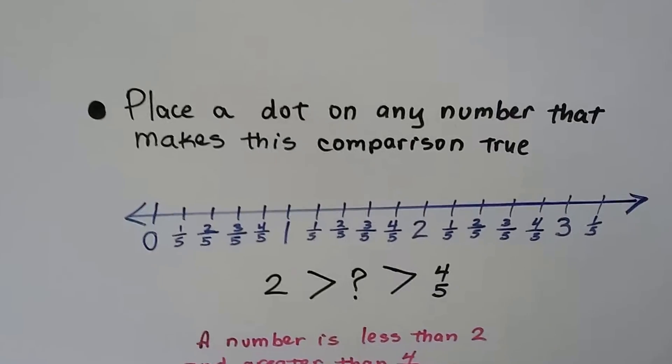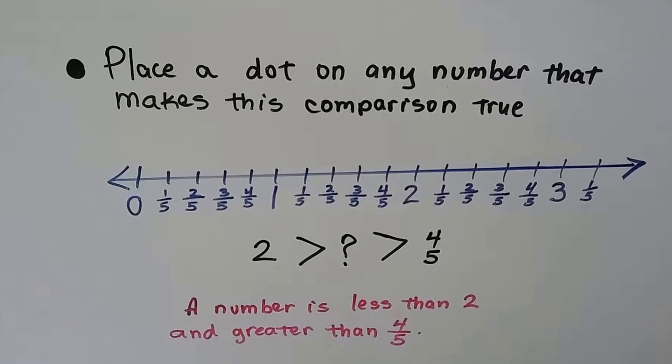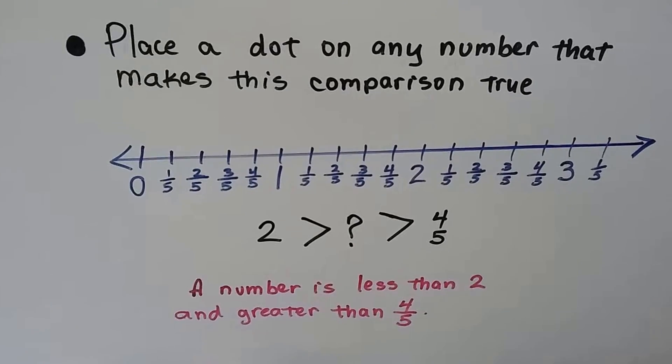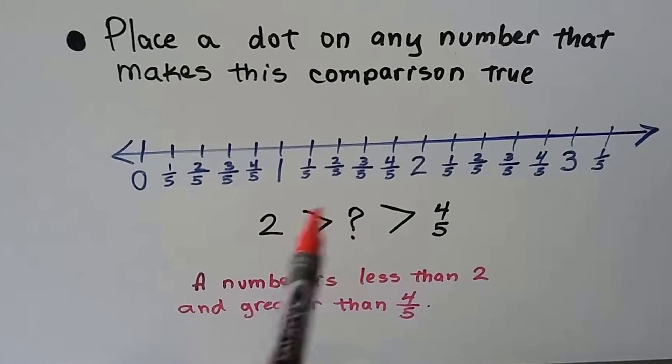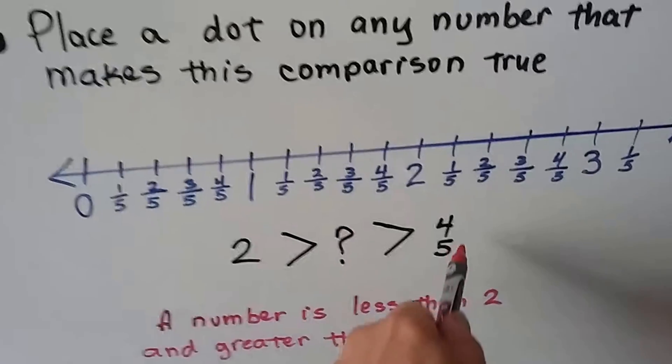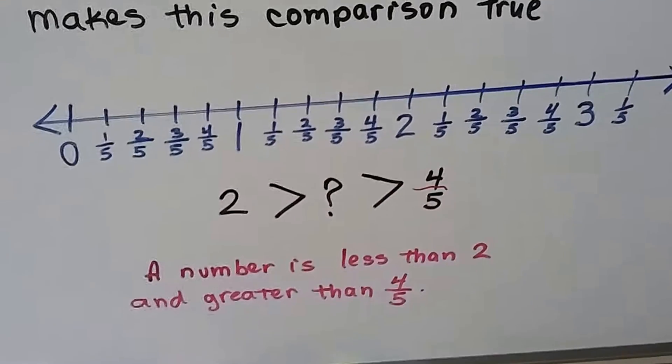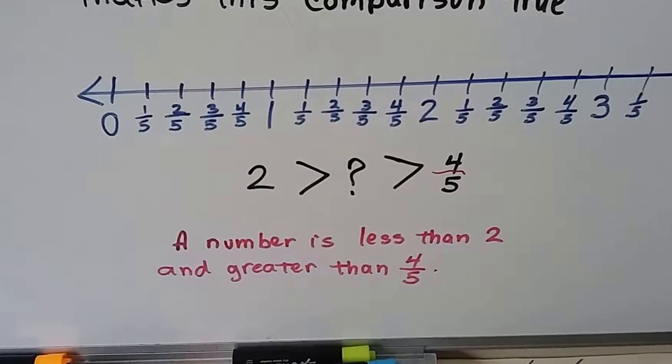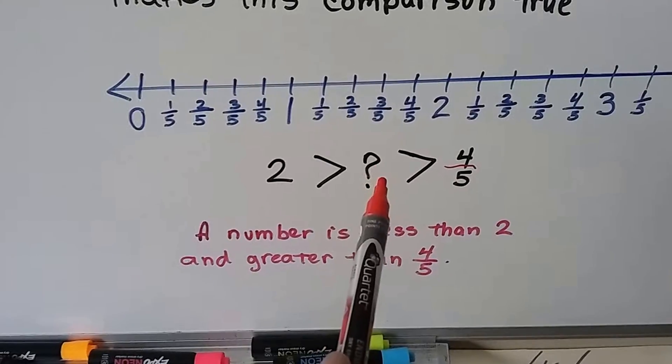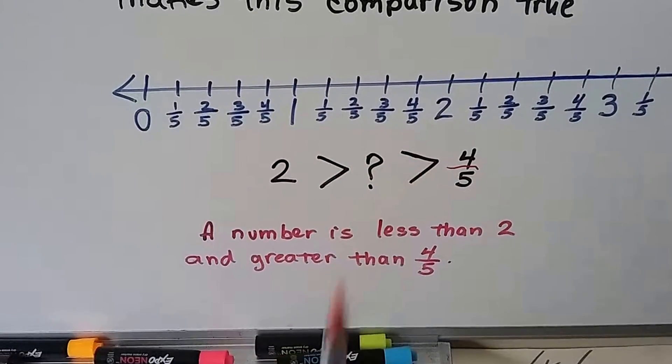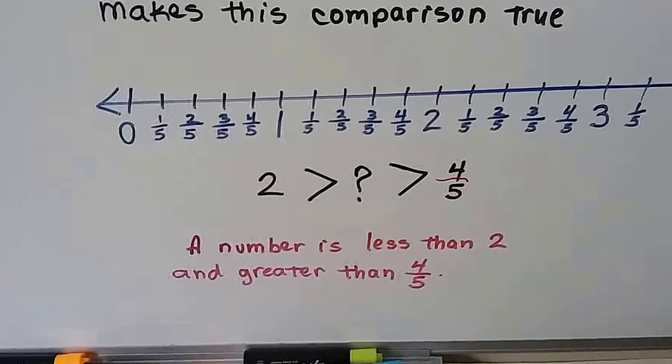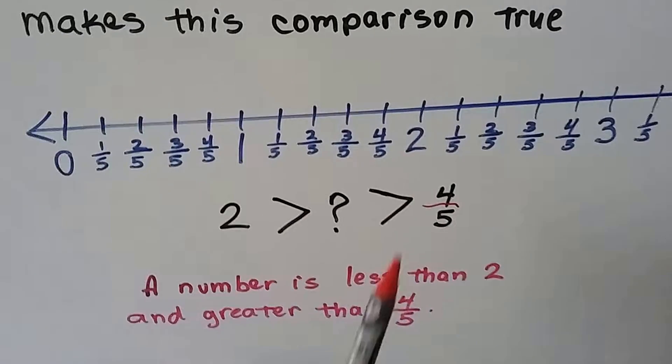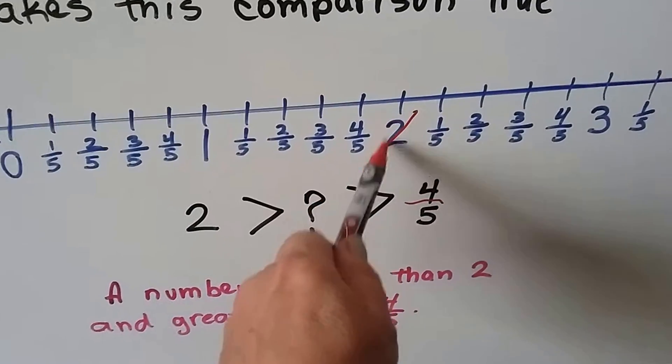This one says place a dot on any number that makes this comparison true. So some number is less than 2 but greater than 4 fifths. We start reading it in the middle. Some number is less than 2 but greater than 4 fifths. So if it's less than 2, it can't include 2, can it? So the 2 is not included.